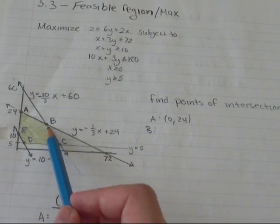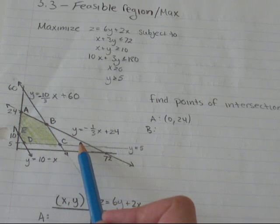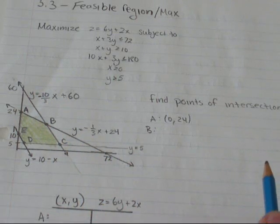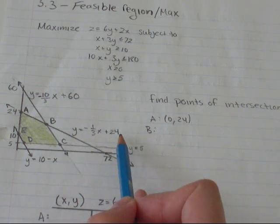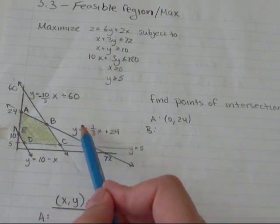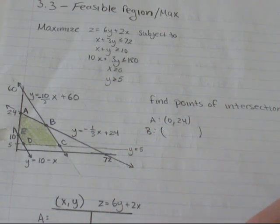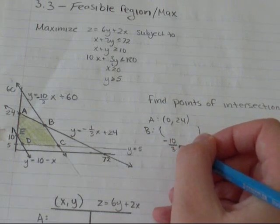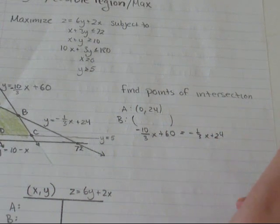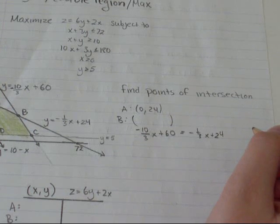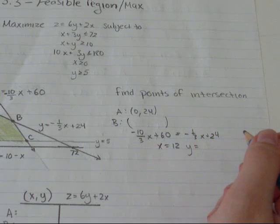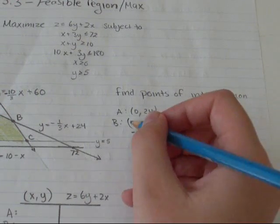For B, it's not as easy. I've got the line y equals negative 1 third x plus 24. And that is intersecting with this line, y equals negative 10 over 3x plus 60. So y equals this and y equals this. So I'm going to leave my spot blank for a minute. So negative 10 over 3x plus 60 equals negative 1 third x plus 24. And when you rearrange all of that, you are going to get x equals 12, y equals 20. So that's going to be my point (12, 20).